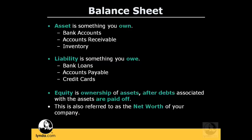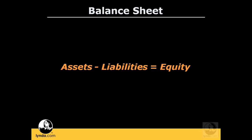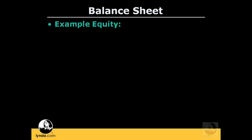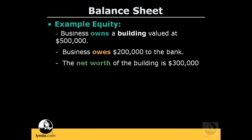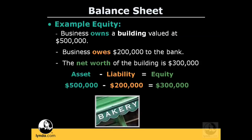To help give you a visual, let's put this concept into a mathematical formula: assets minus liabilities equals equity. For example, let's say you own a building valued at $500,000 but you owe $200,000 to the bank. The owner's equity or net value of the building is $300,000. In our formula: assets of $500,000 minus our liability of $200,000 equals our equity of $300,000.